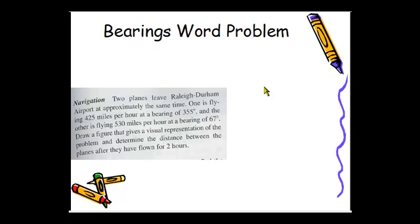So we start out, we have an airport, and since we're using bearings we need a compass. Remember on bearings we start at zero heading north and we go clockwise.